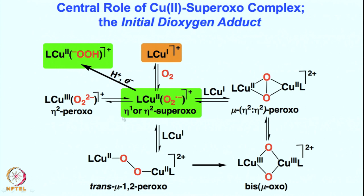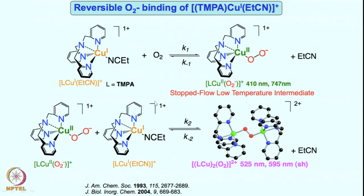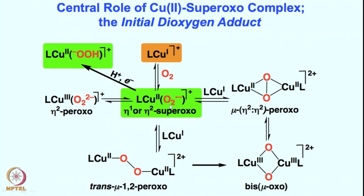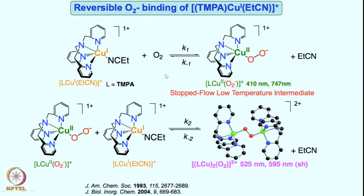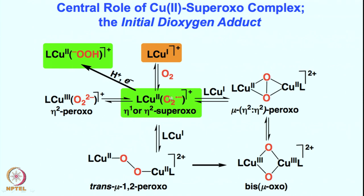Let us give an overview: ligand copper(I) will react with oxygen to give the first-formed intermediate, which is a very reactive species — the ligand copper(II) superoxo intermediate. In this process, copper(I) transfers one electron to oxygen, giving ligand copper(II) and a superoxo intermediate. One electron from copper(I) reduces the overall oxygen moiety to give the superoxo species. Upon transferring one proton and one electron it is possible to form the copper(II) hydroperoxo intermediate from this copper superoxo species. Additionally, if this superoxo intermediate reacts with another copper(I), it can form a ligand copper(II) peroxo — that is, a dicopper peroxo intermediate also known as trans-mu-1,2-peroxo.